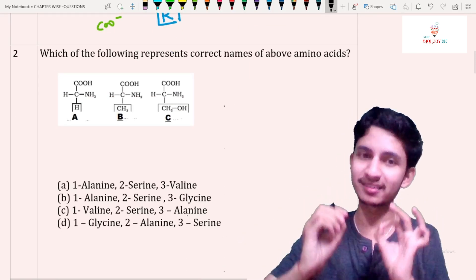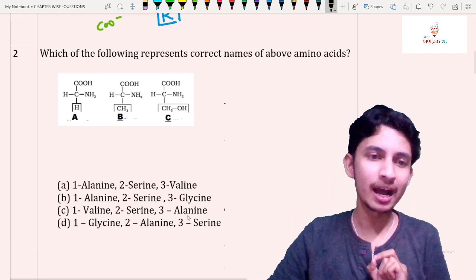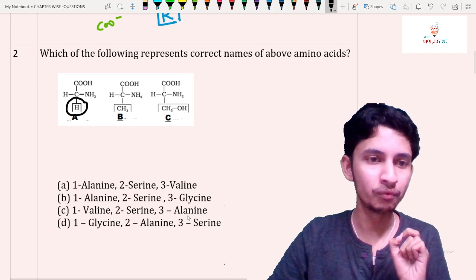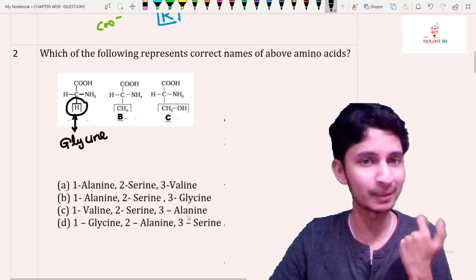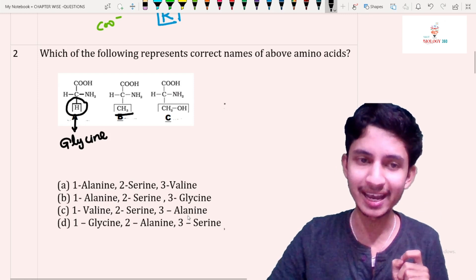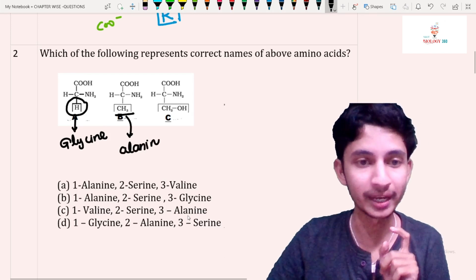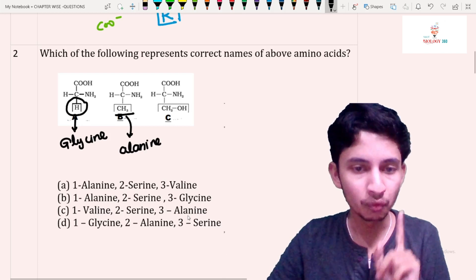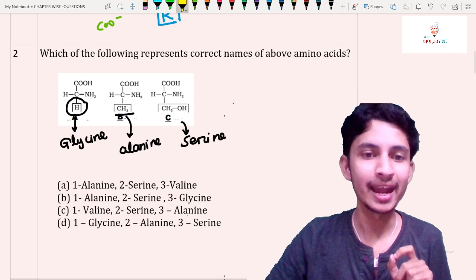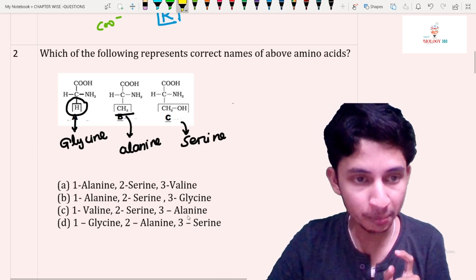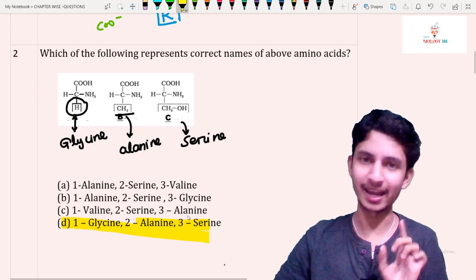Question number two: as discussed, in an amino acid the NH3 and COOH groups are always fixed; the variable part is the R group. If the R group is H, we call it glycine — the simplest amino acid. If R is CH3 (one carbon), it is alanine. If R is CH2OH, it is serine. So A is glycine, B is alanine, C is serine, and the answer is option D.